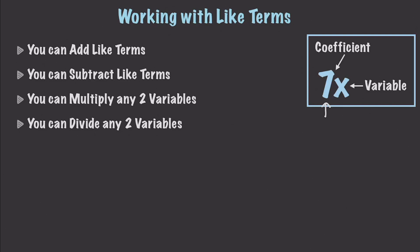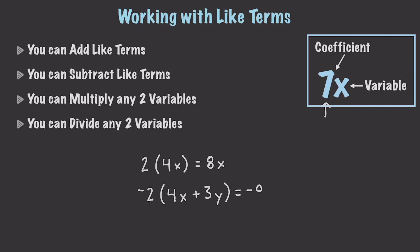And that brings us to multiplying like terms. You're basically going to be able to multiply any two variables. So let's say we have 2 times 4x. That is going to be equal to 8x. You can see we're going to be able to work with unlike terms whenever we're dealing with multiplication. Also, let's say we have negative 2, and we can use our distributive property with (4x + 3y). We take negative 2 times 4x, which gives us negative 8x, and then negative 2 times 3y gives us negative 6y.